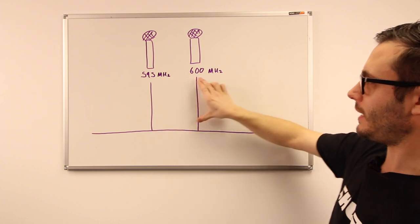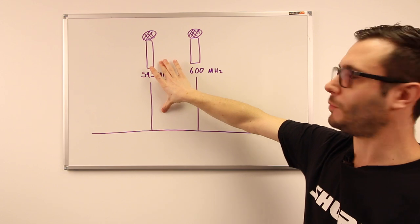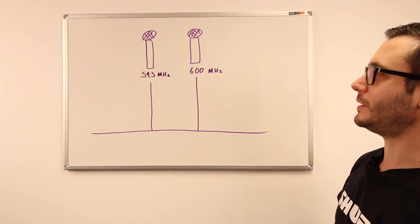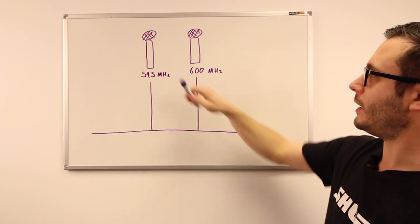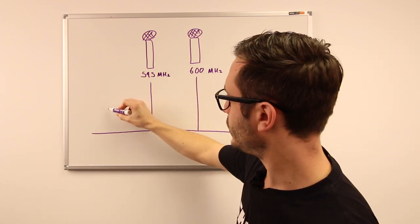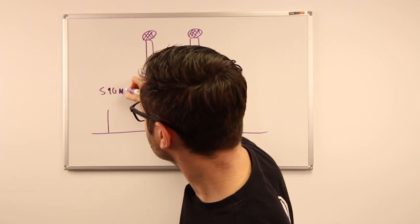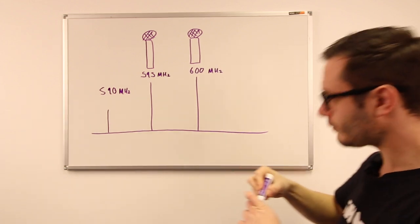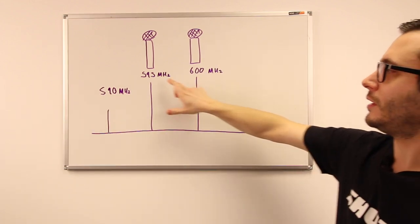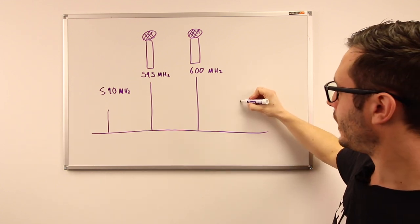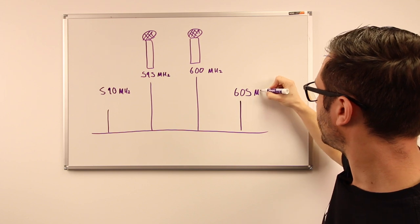This is our fundamental frequency, as is this second one, but the intermodulations happen when we take a double of frequency one minus frequency two. So a double of frequency one is 1190 minus 600, which gives us another intermodulation at 590. Conversely, if we take a double of frequency two, 1200 minus 595, we get another intermodulation appearing at 605 megahertz.